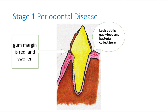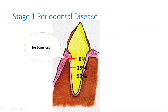This is the only completely reversible stage of periodontal disease, and this is when you and your pet need to go and see the dentist. This is a really good time to do a professional teeth clean. In this stage, there is no bone loss.